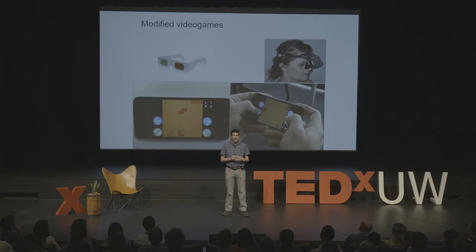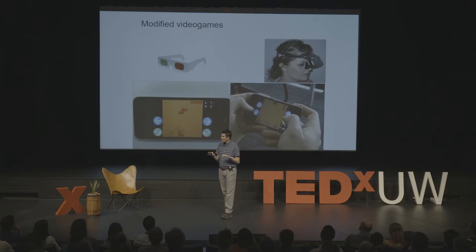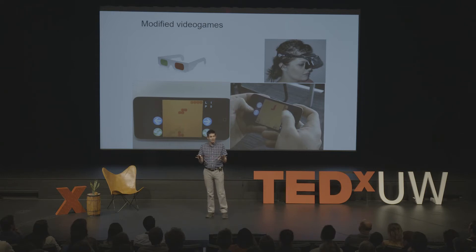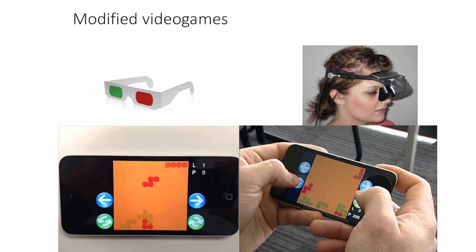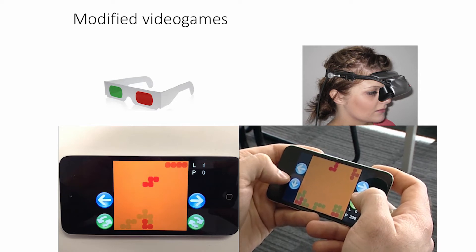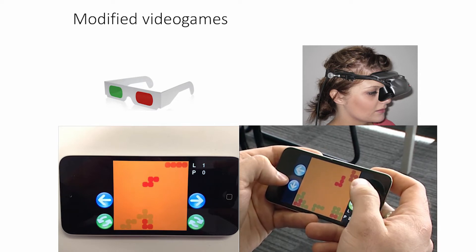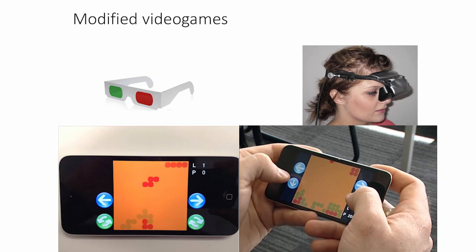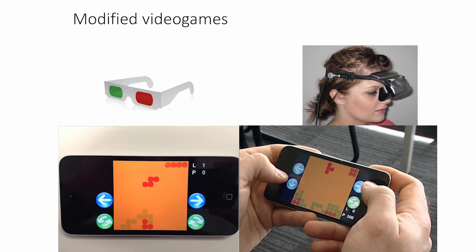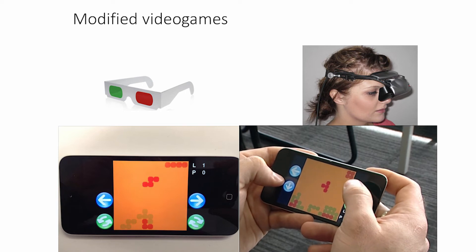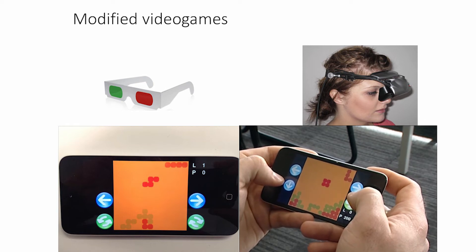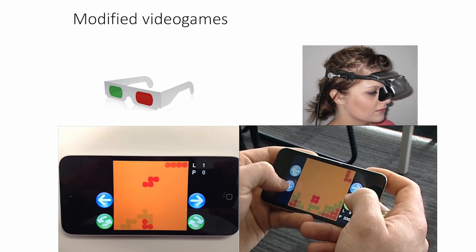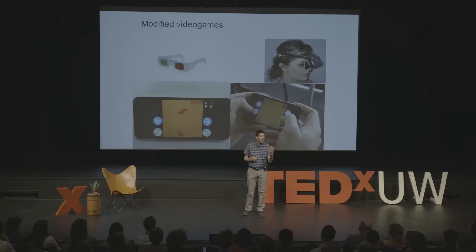Let me begin with video games. When somebody who has amblyopia has both eyes open, typically information from the amblyopic eye is suppressed. What that means is that the amblyopic eye could be open and sending information to the brain, but somewhere along that pathway that information is blocked from conscious awareness — so even though the person has both eyes open, they're only able to see through their good eye.